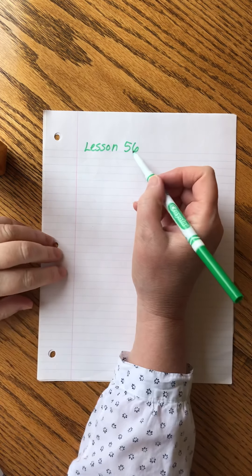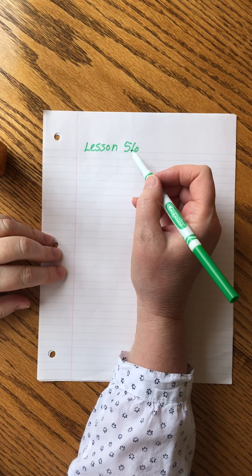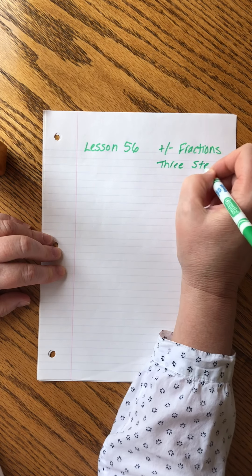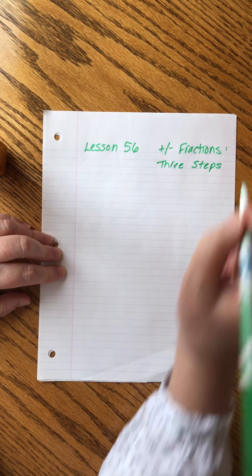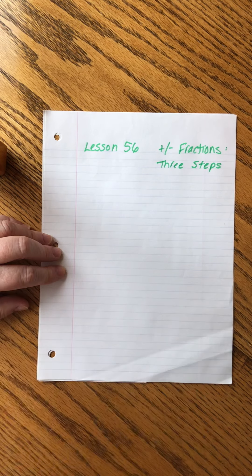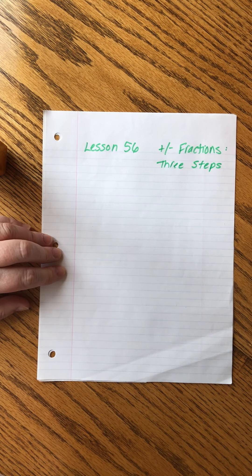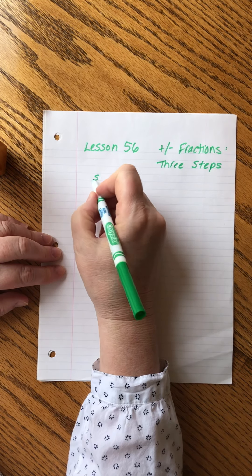Hi students, welcome back. Saxon Math 7-6, we're at lesson 56. We've been talking about adding and subtracting in shorthand, and this time John wants to give us three steps. I've been talking about the steps that we use, but these are John's steps. So let's take a look at what he says.